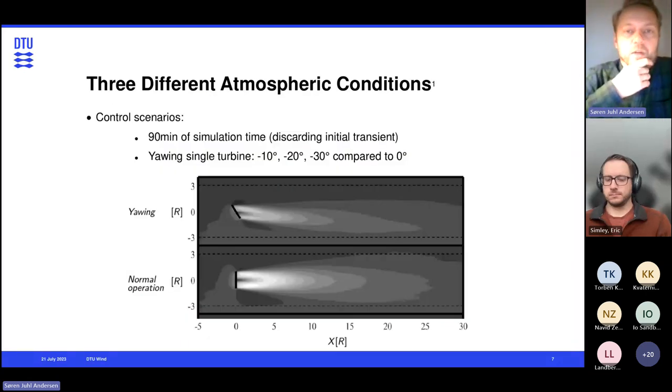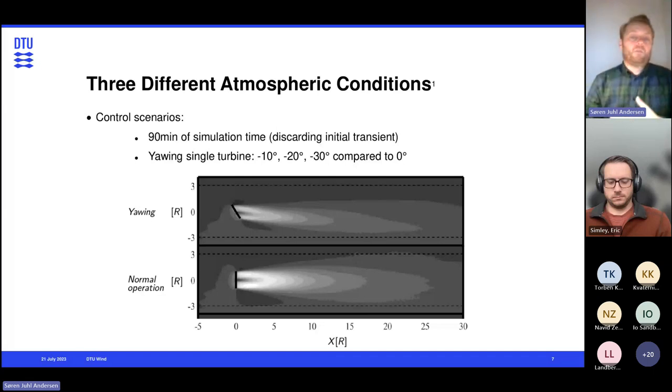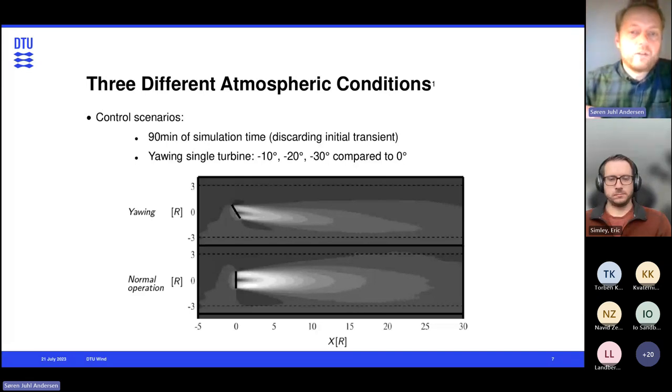So basically, we're going to run these atmospheric boundary layers, and then on and off with the controls. So our control scenarios will be yawing the turbine minus 10, minus 20, and minus 30, and then compare it to 0 degrees. We have a total simulation time of 90 minutes after we have discarded the initial transient where the wake develops throughout the domain. So we'll basically have flow that looks something like what you see here on the bottom, where it is time averaged wake profiles.